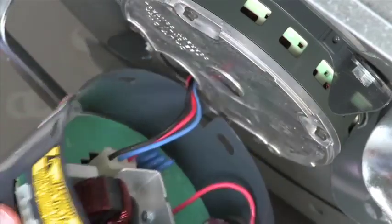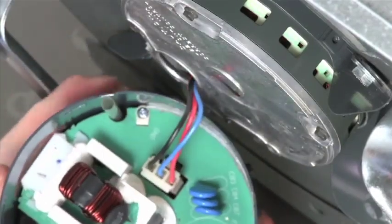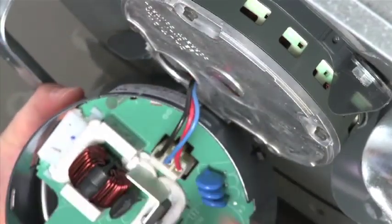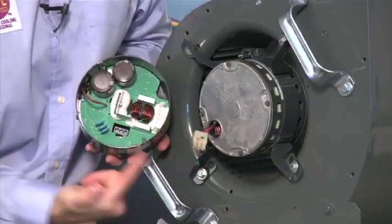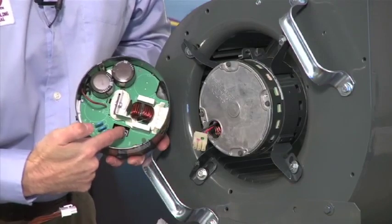And then we're going to move the control gently to a point where we can reach inside and disconnect the three pin connector. There's the connector and there's where it goes on the control.